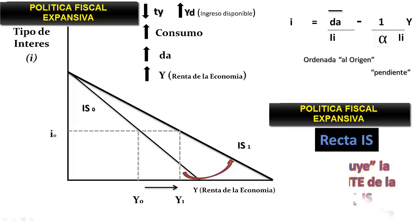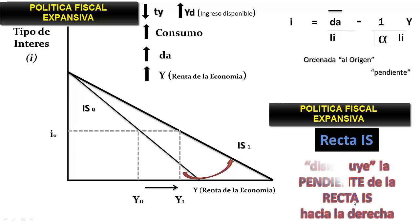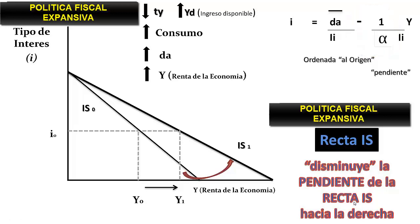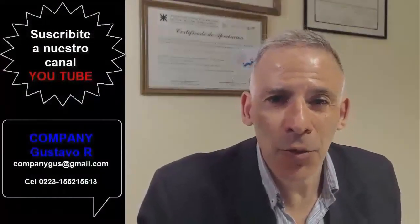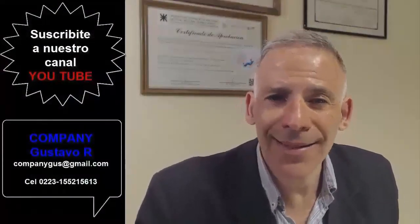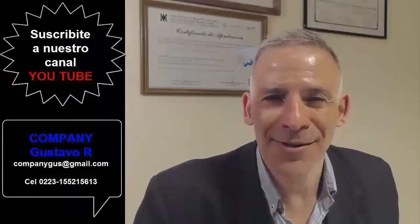Como el multiplicador se encuentra en el denominador de la fórmula de la IS con pendiente negativa, si el mismo aumenta su cuantía, provocará una merma de la pendiente de la curva IS que se traduce en una suba de la renta por un aumento del consumo. Si te gustó, suscríbete a mi canal de YouTube para enterarte de nuestros próximos videos. Muchísimas gracias.